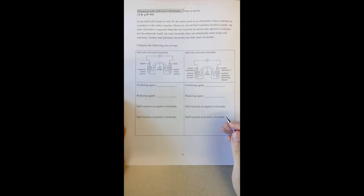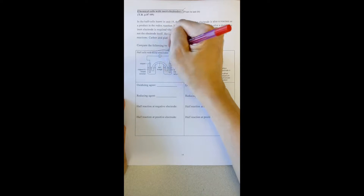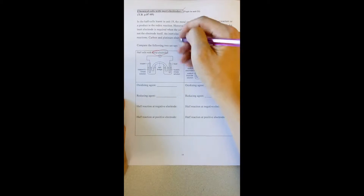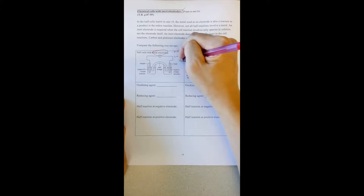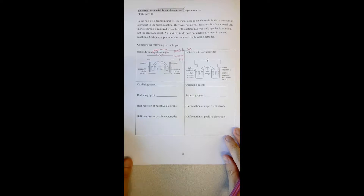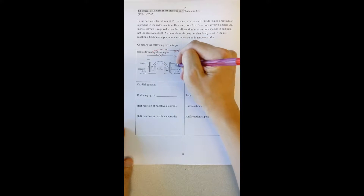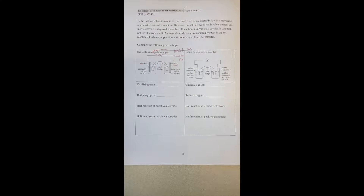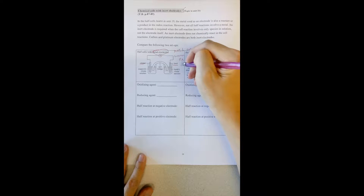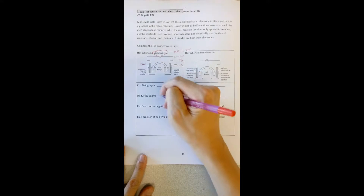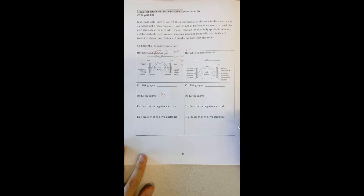We are going to discuss page 14 about the chemical cell with inert electrodes. So first of all, if your cell has metal electrodes, you should pay attention because metals are common reducing agents. So we have two choices: lead or copper. Since lead is more reactive, we choose lead as the reducing agent in our experiment.